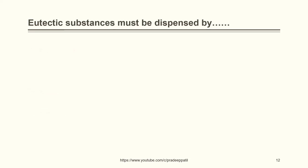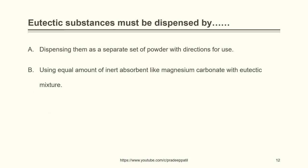Eutectic substances must be dispensed by: A) dispensing them as separate set of powder with directions for use, B) using equal amount of inert absorbent like magnesium carbonate with eutectic mixture, C) both A and B, or D) none of the above. The correct answer is both A and B. You can either dispense the content as a separate set of powders and mix it when going to use it, or use an absorbent to get a free-flowing powder.